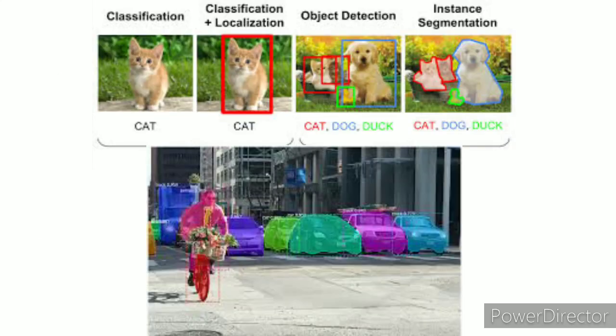4. Object segmentation: in object detection the purpose was to detect objects with surrounding bounding boxes, but in instance segmentation we want to segment objects with pixel-level accuracy instead of boxes. Facebook AI developed a model named MaskRCNN for this purpose. For example, say you have an image with a road, a man moving on the road, cars, trees, etc., and we want to describe each object with the precision of single pixels.